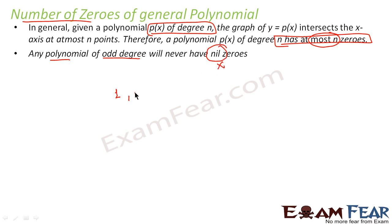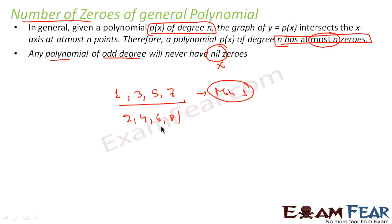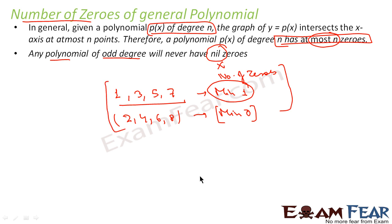If you're talking about degree 1, 3, 5, or 7 polynomials, all these polynomials should have a minimum of 1 zero. But if you're talking about even degrees — 2, 4, 6, 8 — the minimum number of zeros is 0. So for odd degree the minimum is 1, and for even degree the minimum is 0.